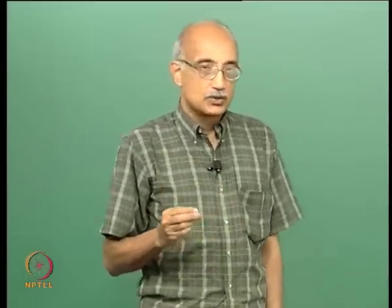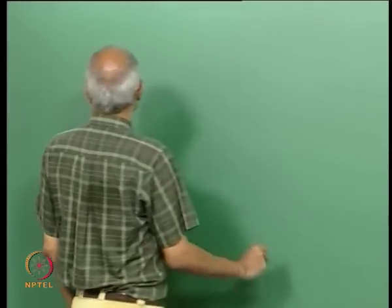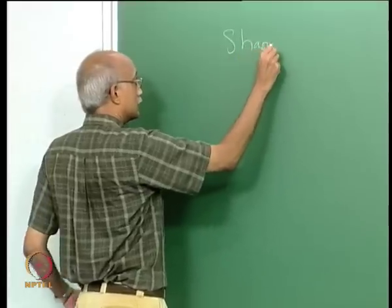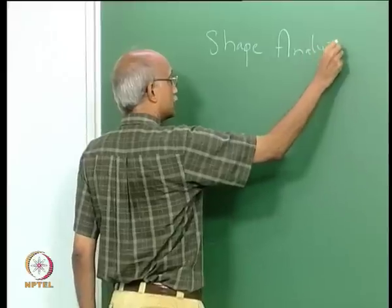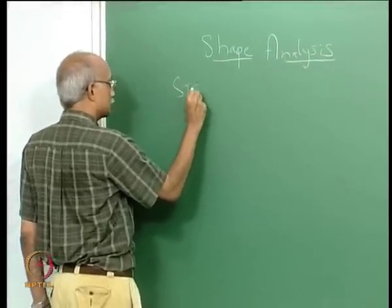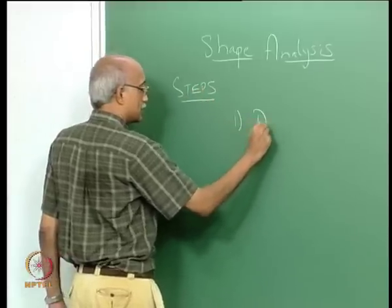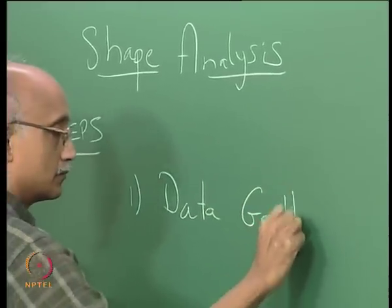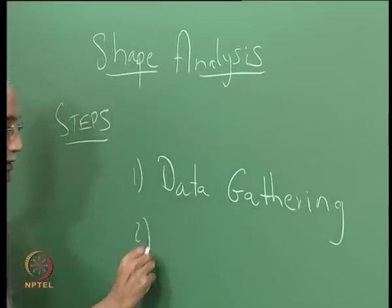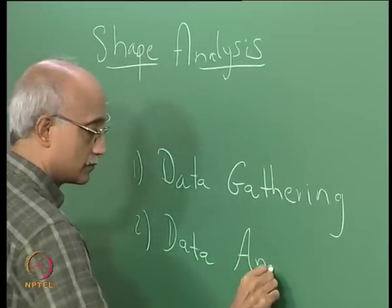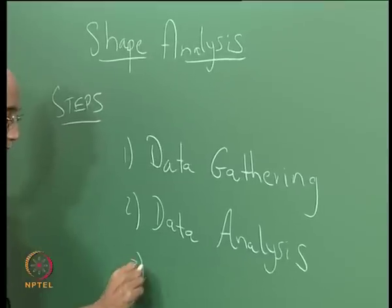Going back to shape, shape analysis is further complicated by the fact that, since it is a subjective measure, it is really the analyst's choice as to when the investigation stops. Essentially, there are three steps in shape analysis: the first is data gathering, the second is data analysis, and the third is the judgment process.